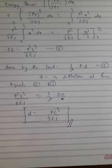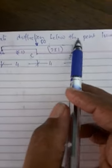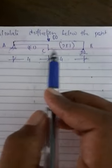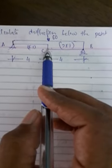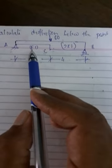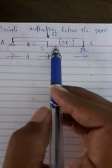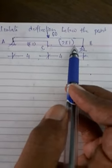Similarly, let us take a problem on simply supported beams. Numerical 2: Calculate deflection below the point load. The beam ABC has AC equal to 4 meters and CB equal to 4 meters, with a point load of 60 kN at point C. The EI values are: for AC it is EI, and for BC it is 2EI. Let me draw the line diagram for this.